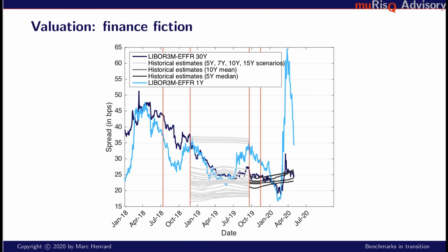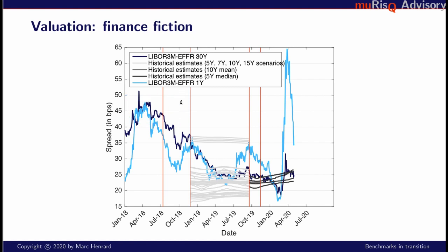Let's look at this from a historical data perspective. In this graph, I will start with the dark blue curve. This represents the spread for a basis swap — a basis swap in dollars between LIBOR three months and overnight Fed Funds. This is for a tenor of 30 years, to make sure it includes all the fallback. Roughly two years ago, the spread was around 45 basis points. Then there was the start of discussion at ISDA level and the different consultations. After those consultations, the spread started to decrease, reaching roughly 25 basis points one year ago, and has been roughly unchanged at this level since.